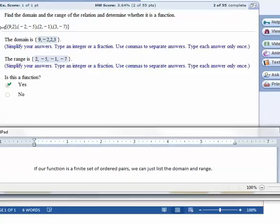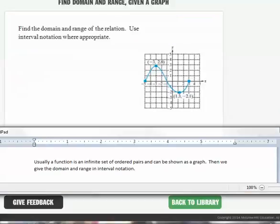If our function is a finite set of ordered pairs, like this one, we can just list the domain and range, like we did here. But usually, a function is an infinite set of ordered pairs, which can be shown as a graph, like this one. Then we need to give the domain and range in interval notation instead of a list.